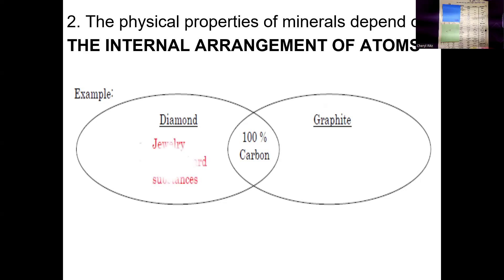We use diamonds for jewelry. A diamond drill bit or diamond saw is used to cut very hard substances. While graphite is used for pencil lead, or they will even powder up graphite and make it into a lubricant — I believe brake lubricant. If you've ever changed brakes, you've got to put some of this black goopy stuff onto the brake pads. It's literally graphite. So it's not just the composition that determines the properties — it's how those atoms are put together.